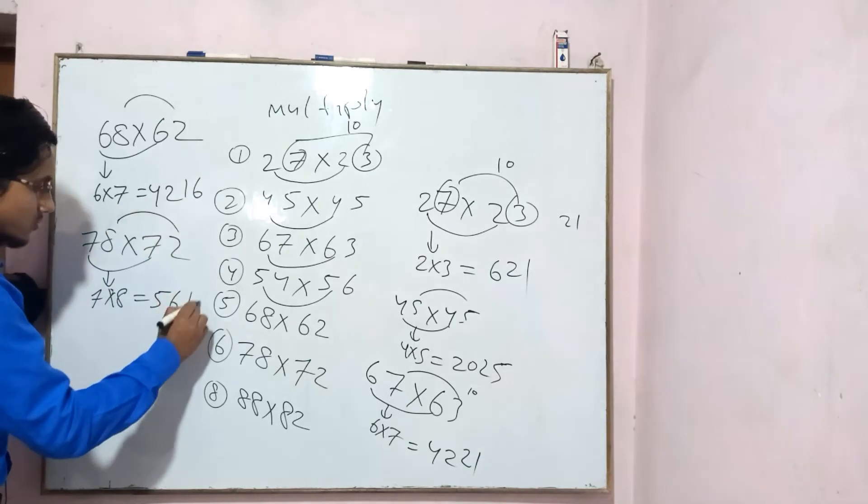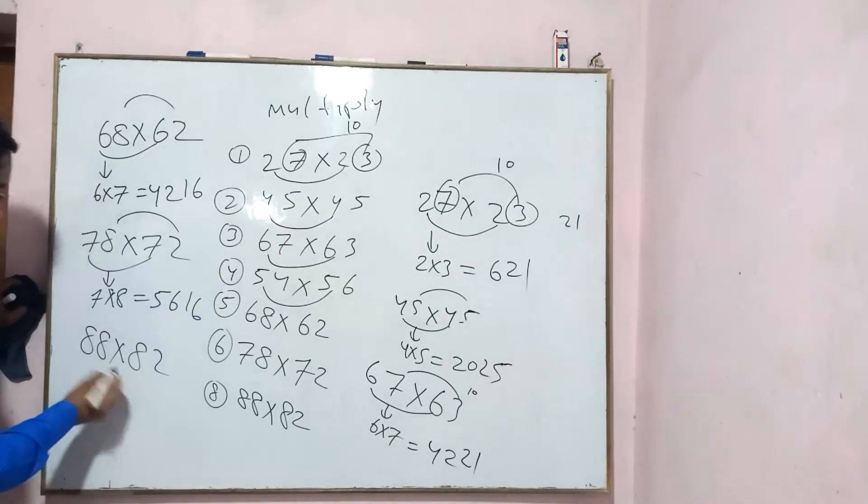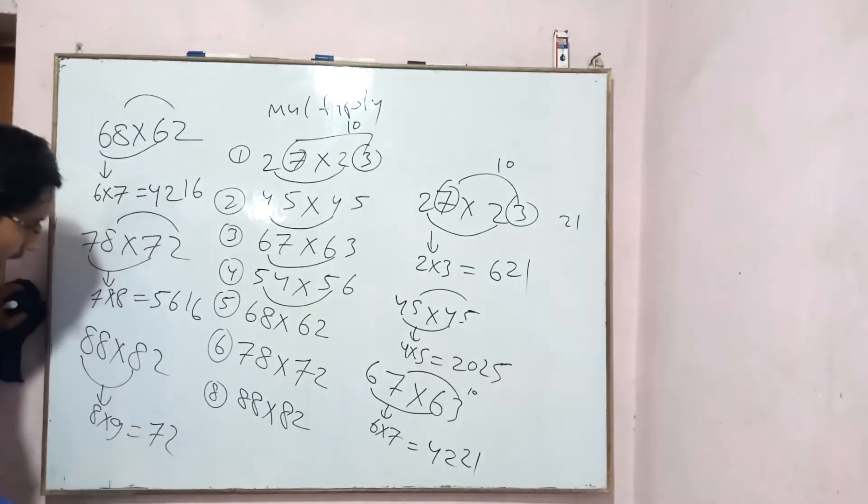88 into 82. Same. After 8, what comes? 9 comes. So it becomes 72. 8, 9, 72.